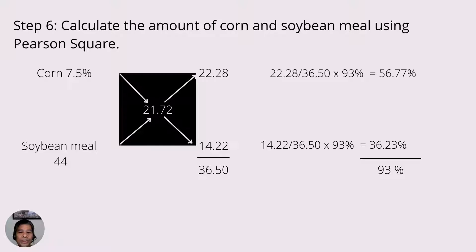In step number 6, we will proceed to calculate the amount of corn and soybean meal using the Pearson Square. If you have watched the first 2 episodes, you probably know already how to do this.